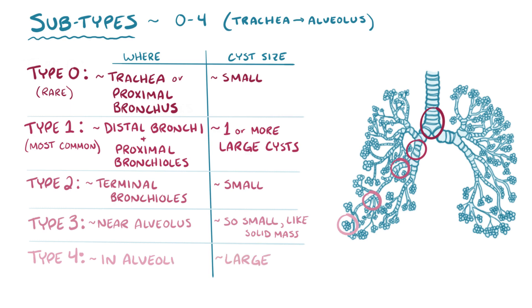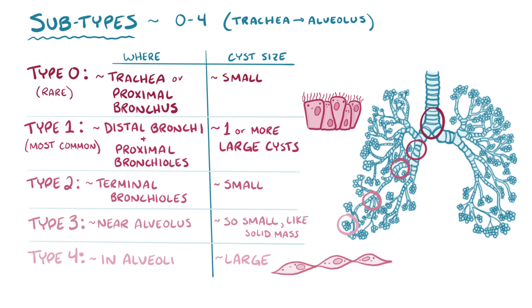In addition to the size of the cysts, the five types also differ in the kind of epithelial cells that line the inside of the cysts. Type 1s are lined with ciliated, pseudostratified, columnar epithelium — the same epithelium that makes up normal bronchi — whereas type 4s are lined with flat alveolar cells, which is just like the alveoli that they come from.